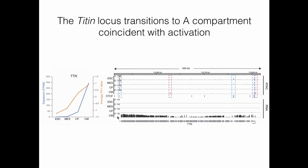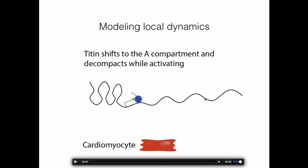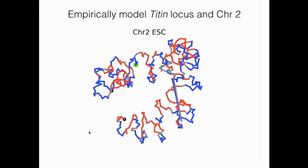One powerful thing we can do with Hi-C data is empirically model the 3D structure of chromosome 2 using an algorithm developed by the Noble Lab here at the University of Washington. I've animated the transitions between the four states on chromosome 2, where red marks A regions, blue marks B regions, and gray marks boundary regions. The green spot is the Titin locus. During differentiation, you can follow the green dot as it moves from blue to red — the A regions stretch out and open up while the B regions pack down.